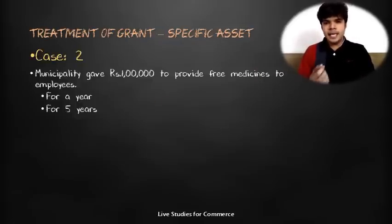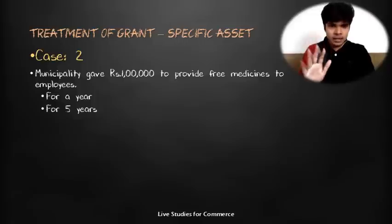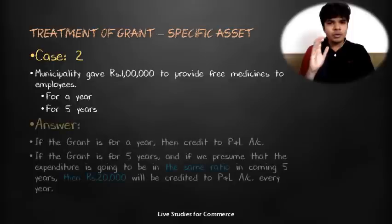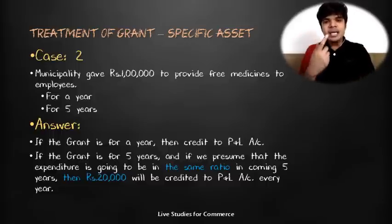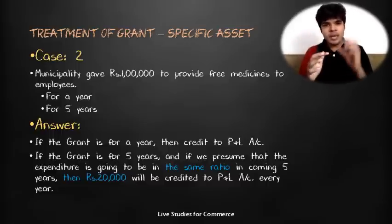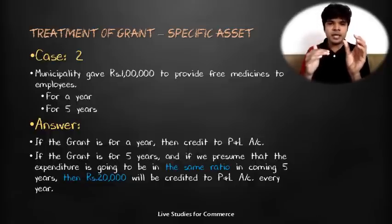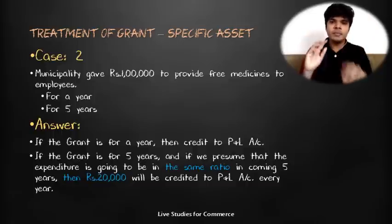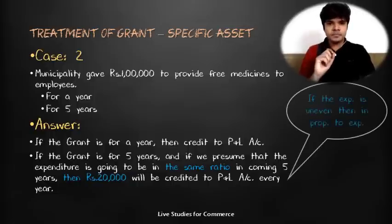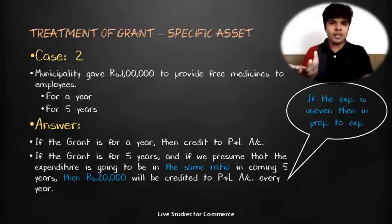Let's take a practical case on revenue grants. A municipality gave ₹1 lakh to provide free medicines to employees — for one year or for five years. If the grant is for one year, it should be immediately credited to the profit and loss account. If it is for five years and expenses are even, divide ₹1 lakh by 5 and credit ₹20,000 each year to profit and loss. If expenses are uneven, the grant amount should be credited in proportion to the expenses incurred each year.